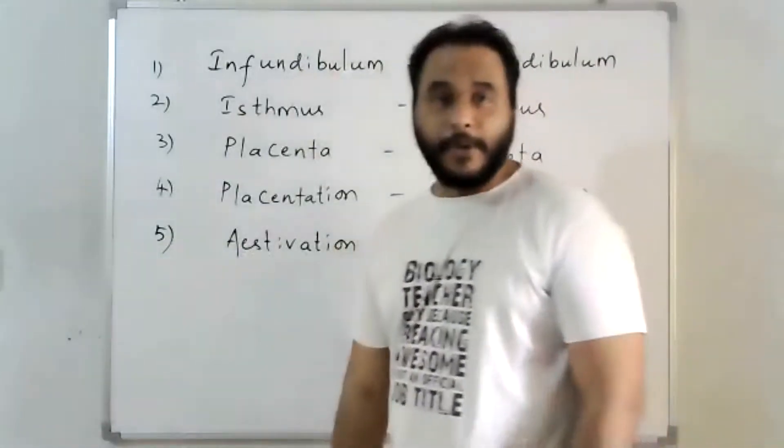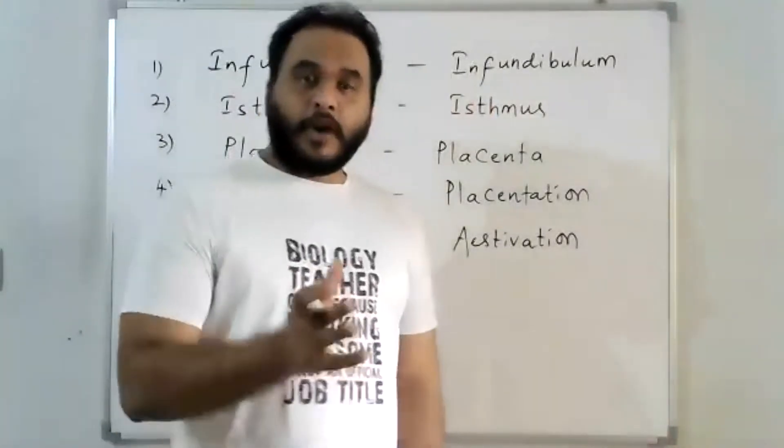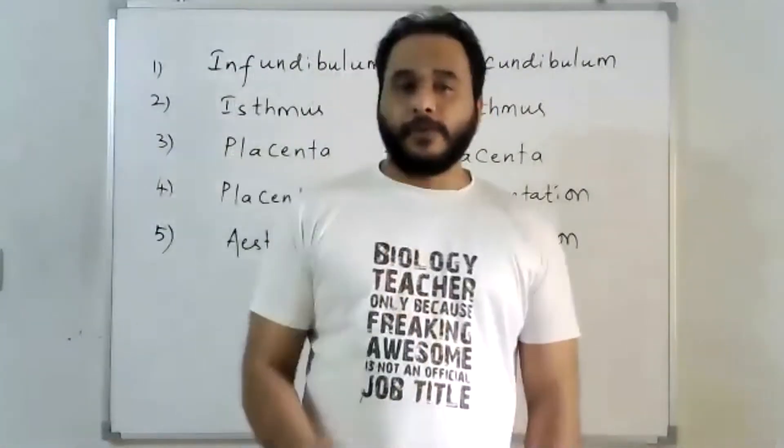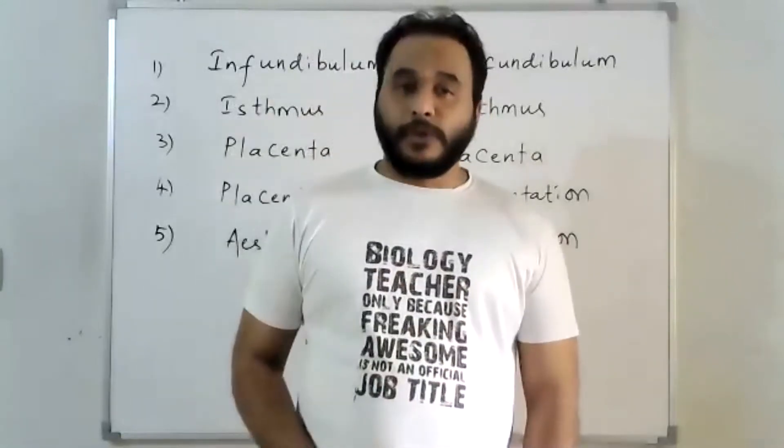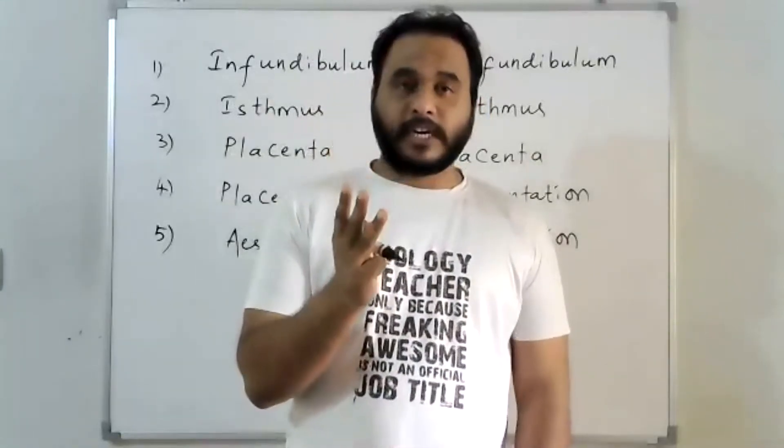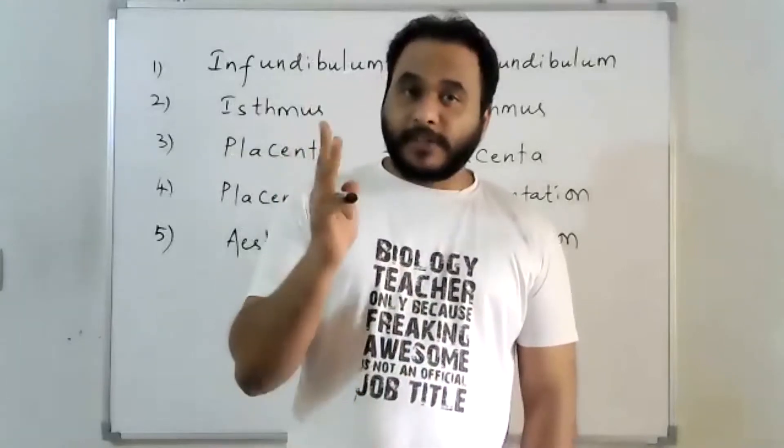Coming to infundibulum number two. This second infundibulum term belongs to the female reproductive system. In the female reproductive system, there is a fallopian tube which consists of three components: number one, infundibulum; number two, ampulla; number three, isthmus.